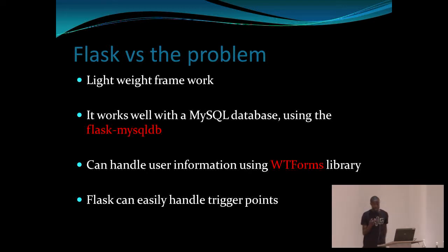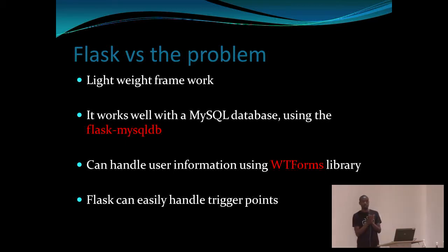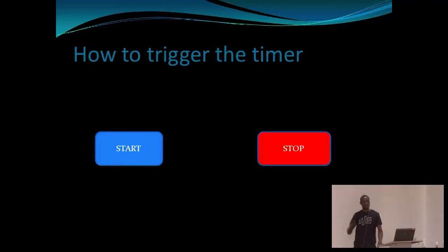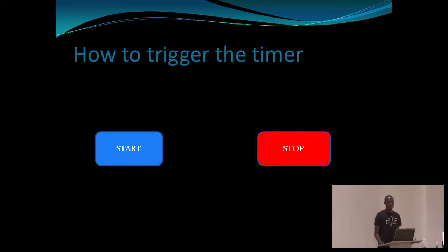So how do we trigger the time? The easiest way is to use a button. Let's say there's a breakdown — the technical operator presses the start button, the time starts to record. He fixes the machine. When he's done, stop. We have recorded the time. It's already entered the database.